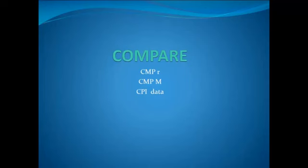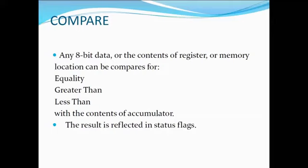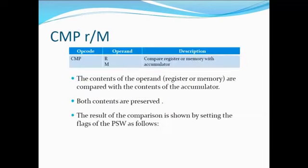We have the compare instruction. It is of three types: CMPR, CMPM, and CPI data. Any 8-bit data or the contents of a register or memory location can be compared to the accumulator. The result is reflected in the status flags. In CMP, R or M, we have R and M as the operand and CMP as the opcode, and both the contents of memory and accumulator are preserved after this instruction. The result of comparison is shown by setting the flags of the PSW.